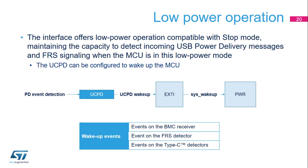The UCPD can be programmed to remain active in stop 0 and stop 1 modes. The detection of a PD event while the MCU is in stop mode causes a wake-up condition, signaled to the EXTI unit and then to the PWR unit. The following events can be configured to cause a wake-up request: events on the BMC receiver such as message reception, fast roll swap request, and events on the Type-C detector such as attachment and detachment.